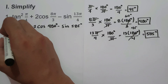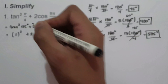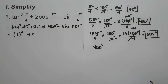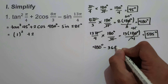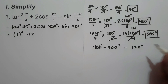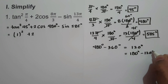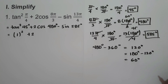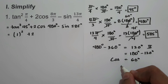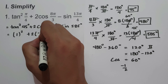Tangent of 45 degrees is 1, so we have 1 squared plus 2 cosine 480 degrees. Since 480 degrees is greater than 360, we subtract 360: 480 minus 360 is 120 degrees. The reference angle of 120 degrees is 180 minus 120, which is 60 degrees. Cosine 60 degrees in quadrant 2 is negative 1/2, so cosine 480 degrees equals negative 1/2.